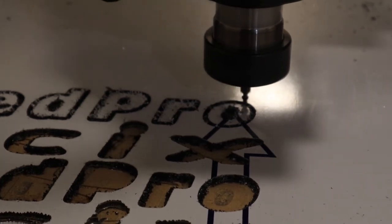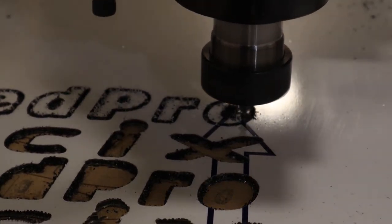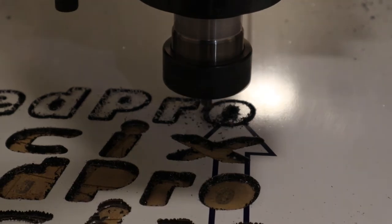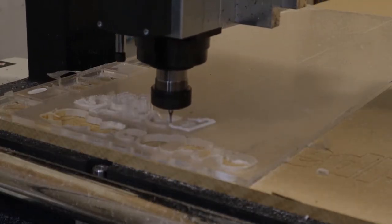Hi, in this video I want to show you how we cut aluminum composite panel, acrylic, and solid aluminum using a CNC router.